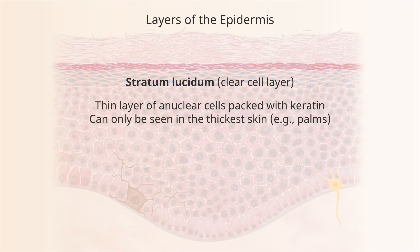Right on top of that is the stratum lucidum, which is really only apparent in very thick skin — for example, a sample from the bottom of the foot where there's a callus. This is where the keratohyalin granules have been lost and the intermediate filaments haven't yet precipitated the same way. It appears clear rather than blue or pink, and is usually only visible in really thick skin.